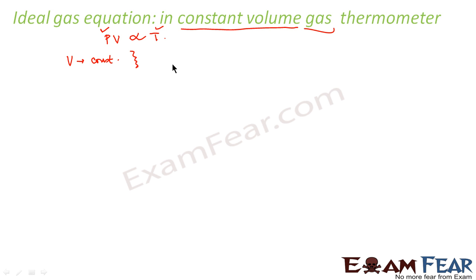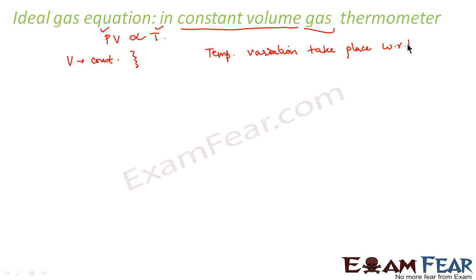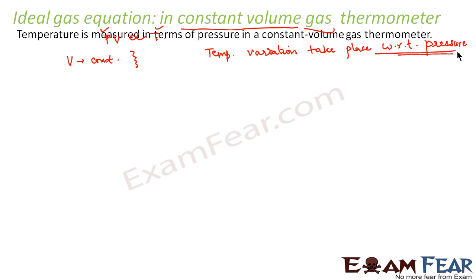So in the case of a constant volume gas thermometer, temperature variation takes place with respect to pressure. Therefore, temperature is measured in terms of pressure in a constant volume gas thermometer.